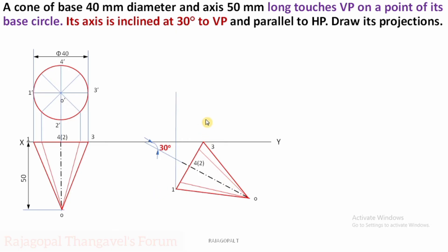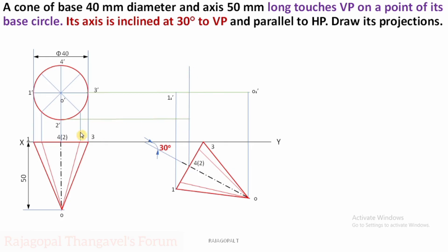For the final step, extend projectors from step 3 and step 1. It is like family members — 1 and 1 dash from both views meeting at one point. Mark it as 1-1 dash in the front view. Similarly complete O dash to O1 dash, then point 2: both 2 and 4 share the same projector — mark as 2-1 dash and 4-1 dash. For point 3, extend 3 dash to meet at 3-1 dash.